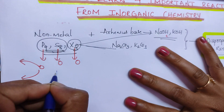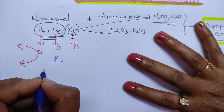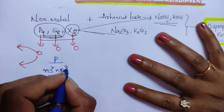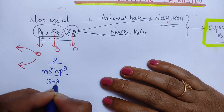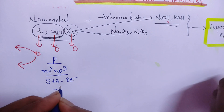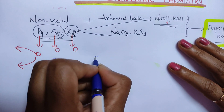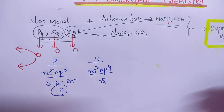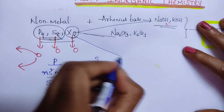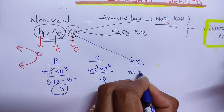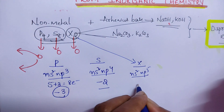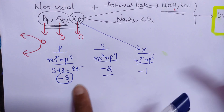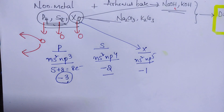For phosphorus (nitrogen family), the general configuration is ns² np³ — five valence electrons. Gaining three electrons gives eight, so it shows −3 oxidation state. Sulfur has ns² np⁴ — six valence electrons; gaining two gives −2. Halogens have ns² np⁵ — seven electrons; gaining one gives −1. So the minimum oxidation states are: phosphorus −3, sulfur −2, halogen −1.